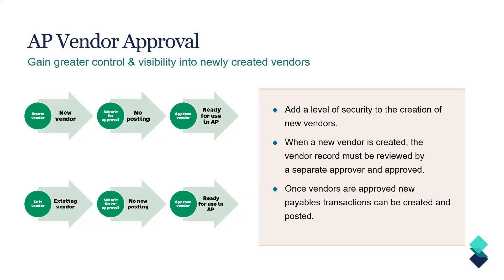If you first turn this on after enabling it, any vendors you currently have will automatically be approved, since the assumption is that anyone already in there has technically been approved. However, once you turn that on, it'll start the workflow where vendors will get submitted. If you edit a vendor, it will go through the approval workflow as well — that's important for things like changing the address or bank information. When a new vendor goes through the approval queue, you can still enter a bill while it's pending. The bill would simply be in draft mode instead of posting, so once the vendor is approved, that bill could be fully posted.